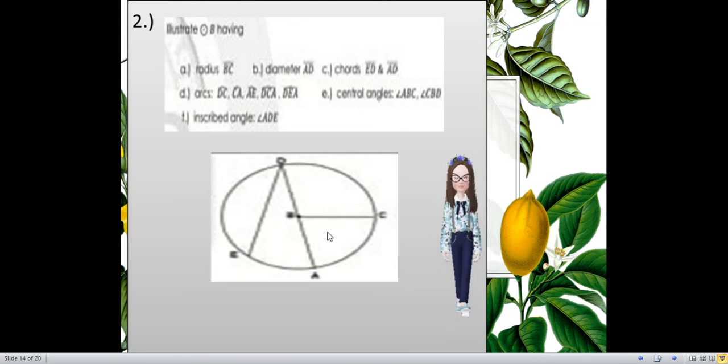For the central angles, am I able to make angle ABC? Angle ABC, of course, I have. I'm able. Angle CBD. Yeah, I also have. And, for the inscribed angle, I have angle ADE. Do I have? Yeah, I have an angle ADE. So, that's how I construct this.